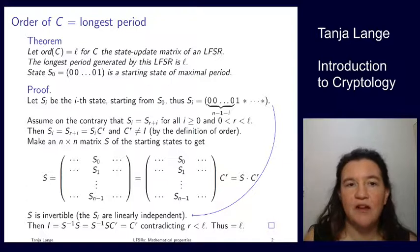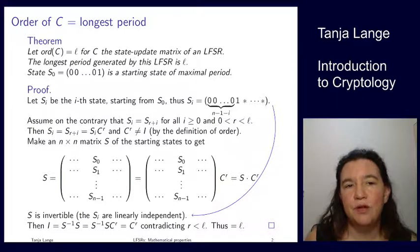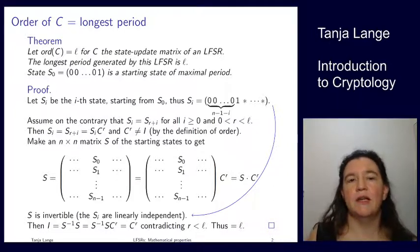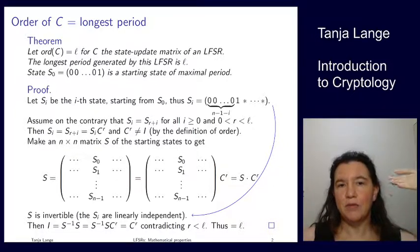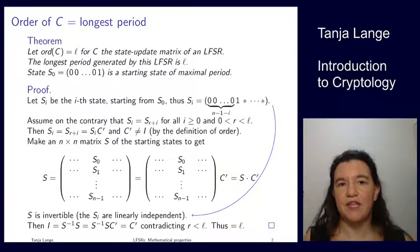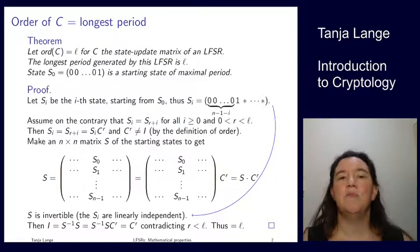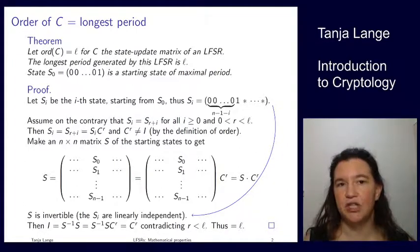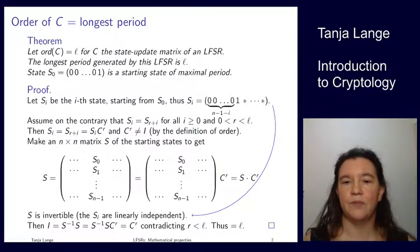Okay, so at this point, we have proven the assumption that we have developed in solving the exercises that by computing the order of C, we're not just getting kind of the maximum of the periods. We do know already that the period of every sequence divides the order of C. But we also have now shown that there exists at least one sequence which achieves this order. And we get one of those if we're starting with S0.